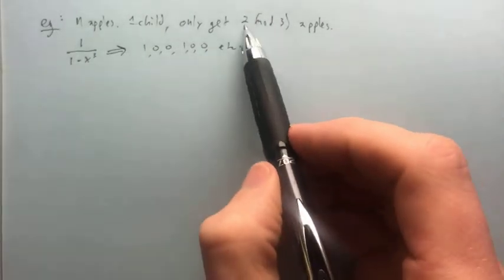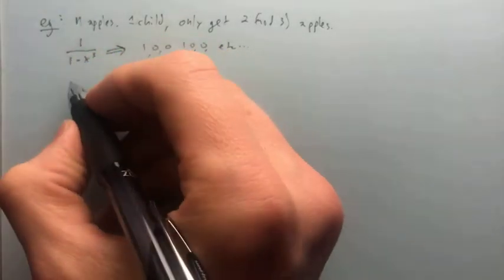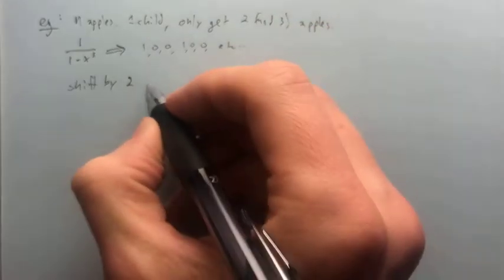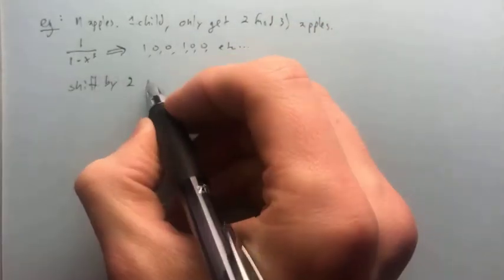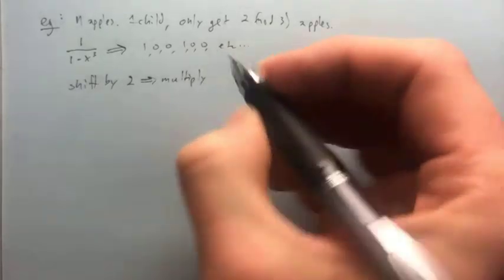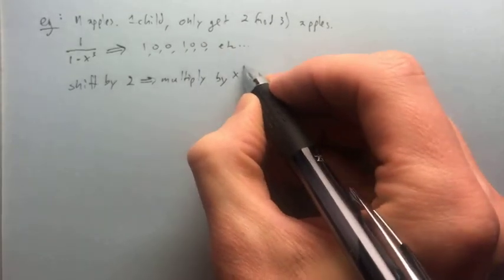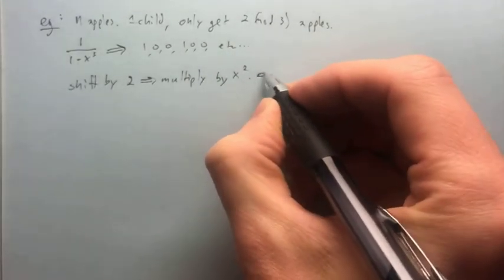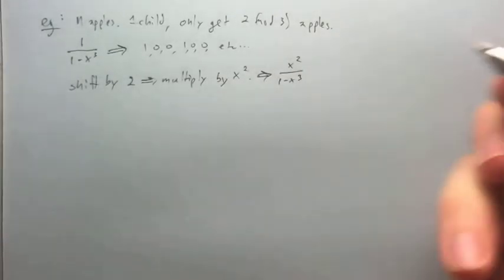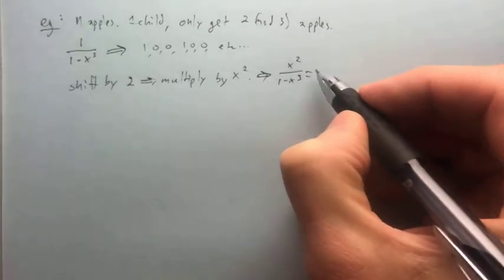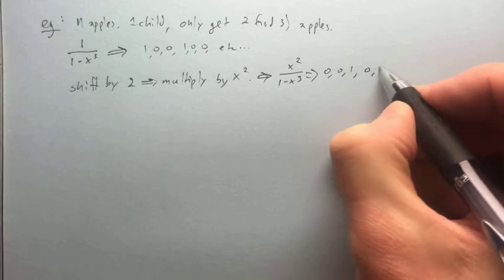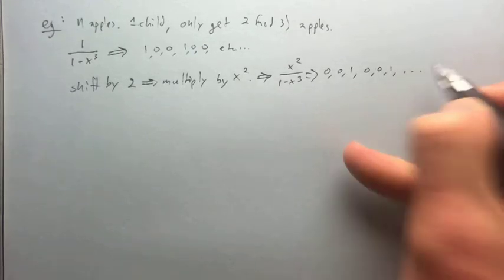But now we want two mod three, so we're going to have to shift this. To shift by two, we multiply by x squared. Our final generating function is x²/(1-x³). And this gives us the sequence 0, 0, 1, 0, 0, 1, etc.